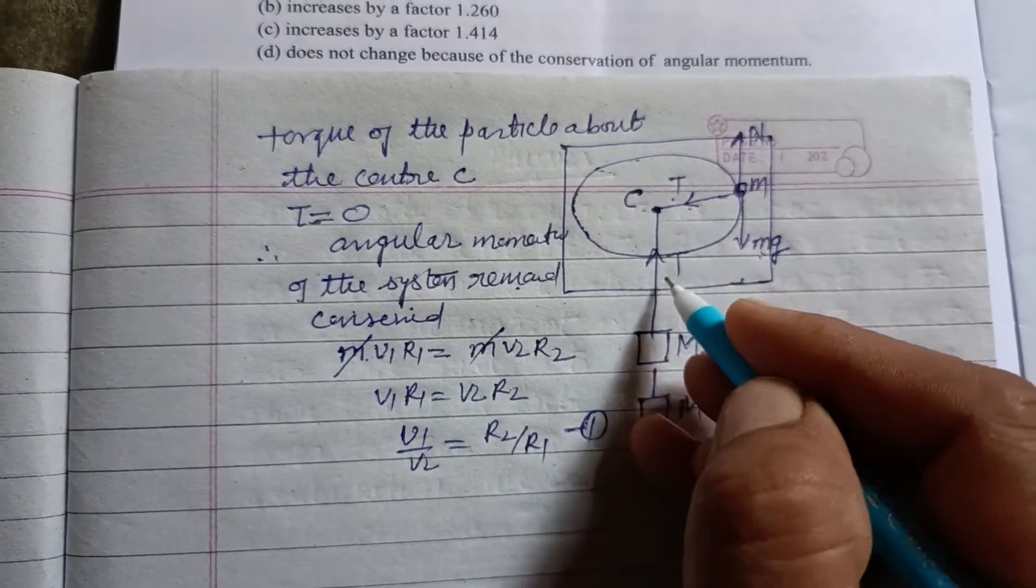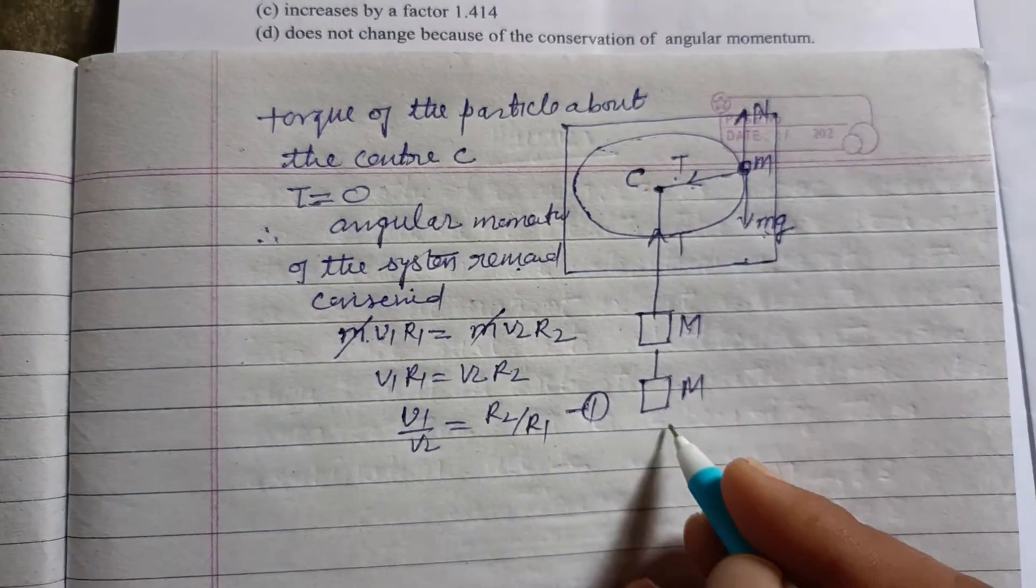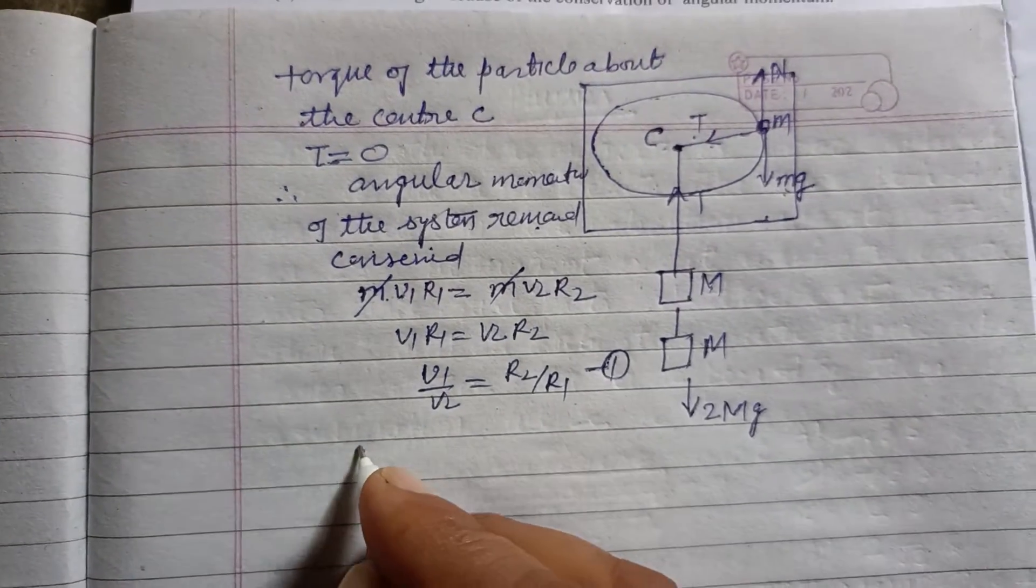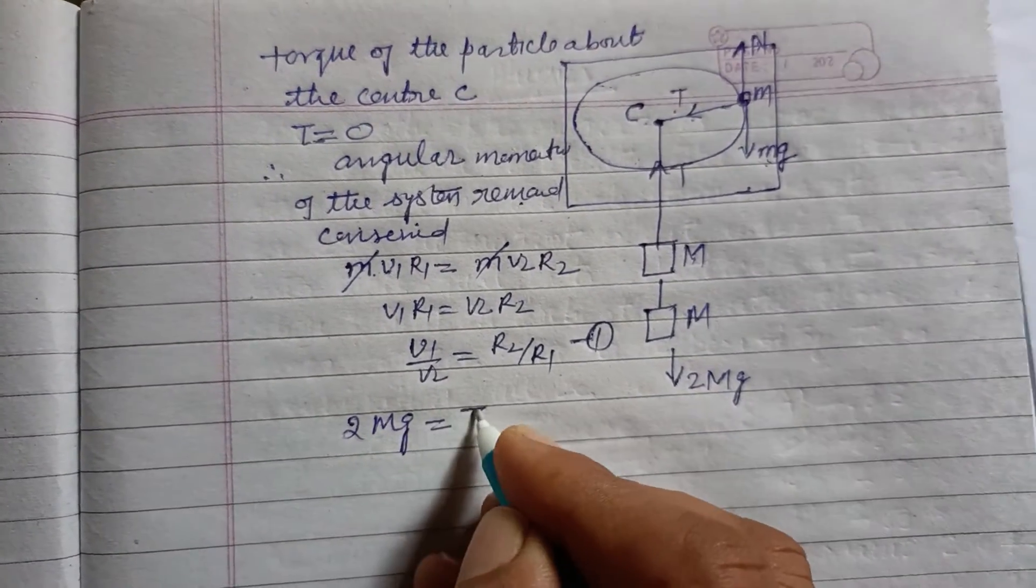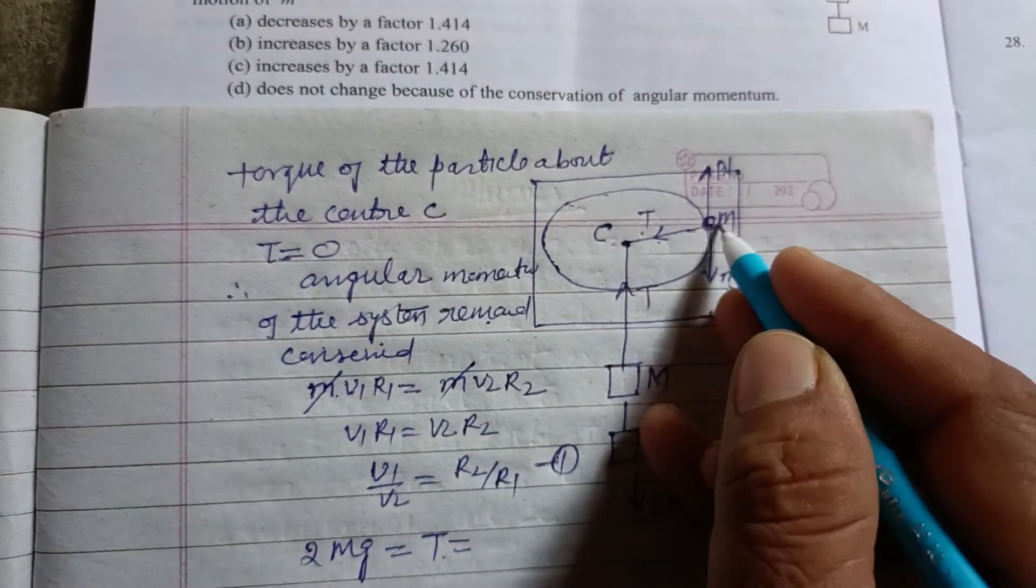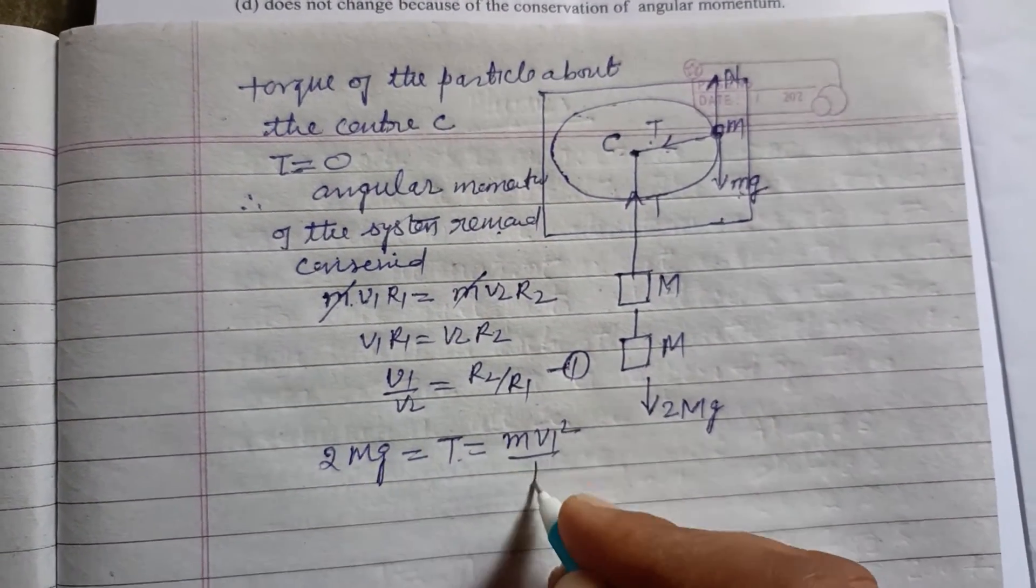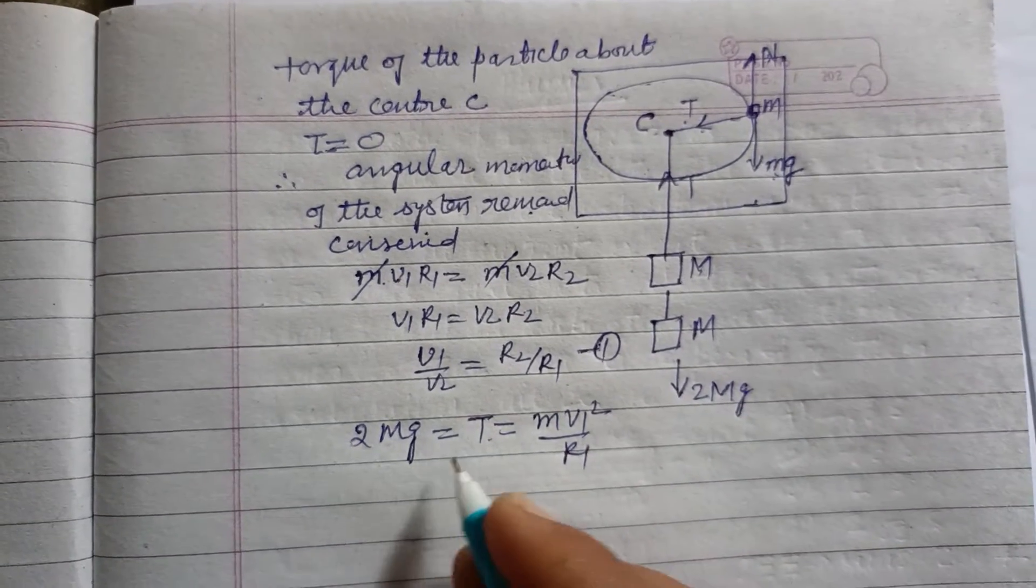Now, since the tension in the string is given by the mass which is 2Mg, so initially 2Mg equals T and this T is given by centripetal force which is MV1 squared upon R1.